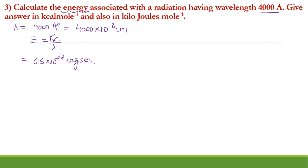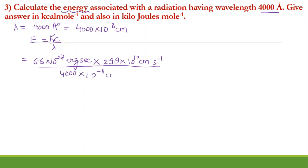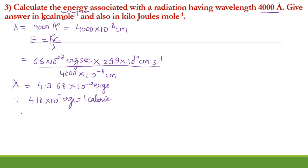Right now I am taking it in erg second. The value of c remains the same — 3 into 10 to the power 10 centimeter per second — and I have to substitute lambda which I have already calculated in centimeters. When you calculate all these things you will get 4.968 into 10 to the power minus 12 erg. Now I want to change it to kilocalorie per mole. Since 4.18 into 10 to the power 7 erg equals 1 calorie, I want to convert it into kilocalories.